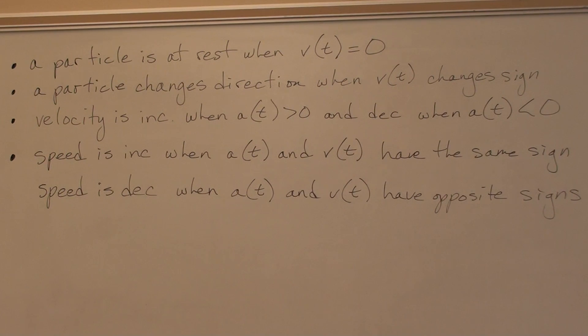What do you think inc and dec stand for? Increasing and decreasing. The velocity is increasing when the acceleration is positive. Because remember, if acceleration is the derivative of velocity, that means acceleration is the slope of velocity. So when its slope is positive, the graph is going up. Velocity is increasing when acceleration is positive, decreasing when acceleration is negative. Speed is different. Speed is increasing when acceleration and velocity have the same sign. They could be both positive or both negative. Speed will be increasing. I'll show you how this works graphically, but not right now. Speed is decreasing when acceleration and velocity have opposite signs.